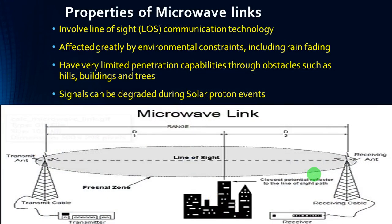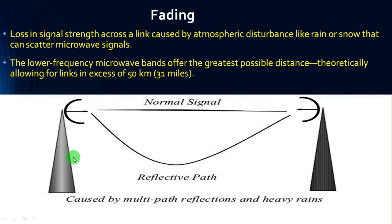The main properties of microwave links are: it involves line of sight, and it is mostly affected by environmental constraints including rain fading and fog. It has limited penetration capabilities through obstacles such as hills, buildings, and trees. Signals can also be degraded during solar proton events. Fading is the loss in signal strength across the link caused by atmospheric disturbance like rain or snow that can scatter the microwave signals.